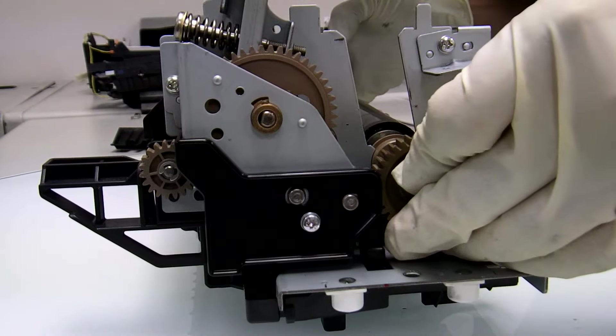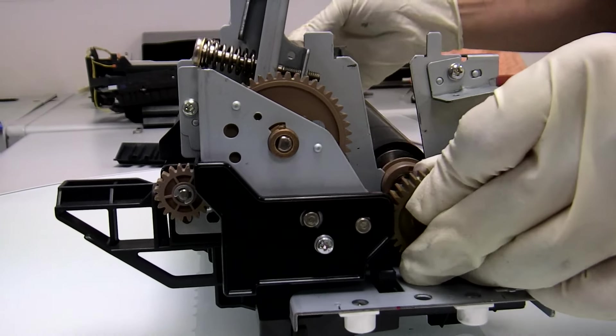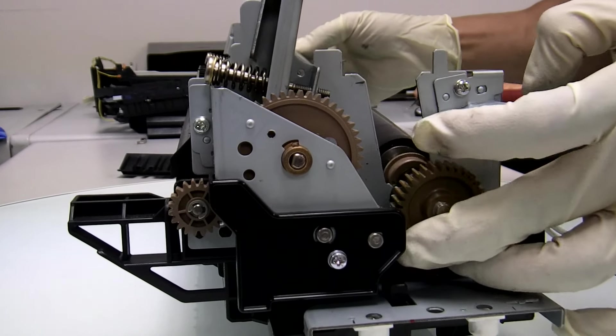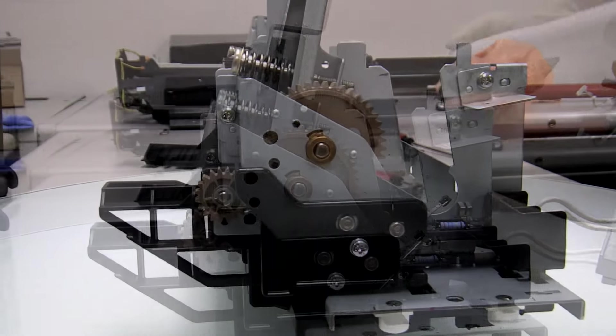Now push the plastic bearings to the side and that should release the pressure roller. Now lift up and don't forget to save the plastic bearings for the new pressure roller.